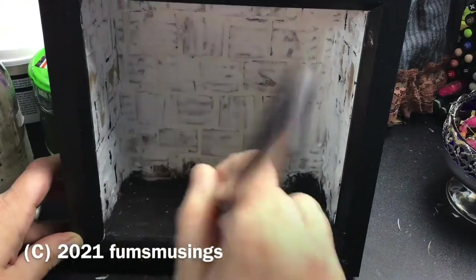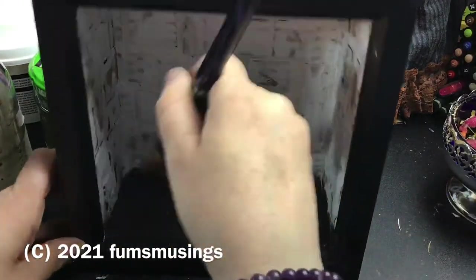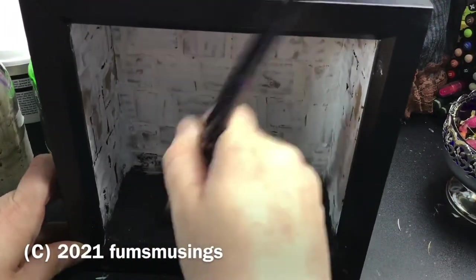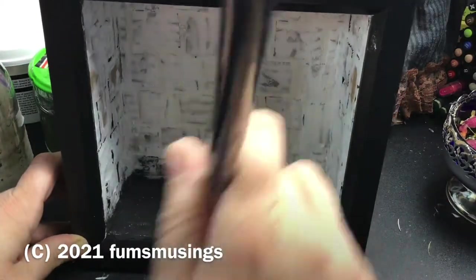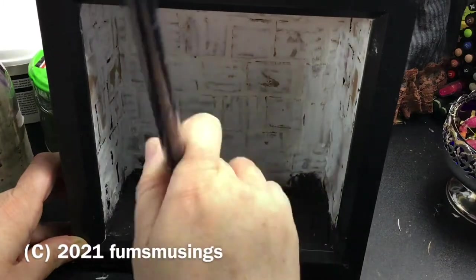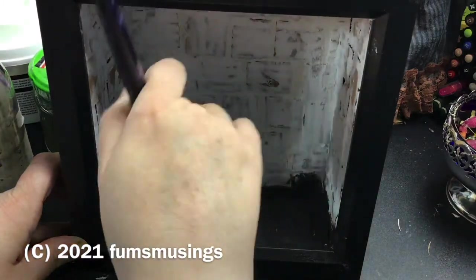You need to leave the grout to dry for 24 hours as well. You can speed the process up a little bit by using a heat gun but you are best off waiting the 24 hours if possible just to make sure it's all fully cured.